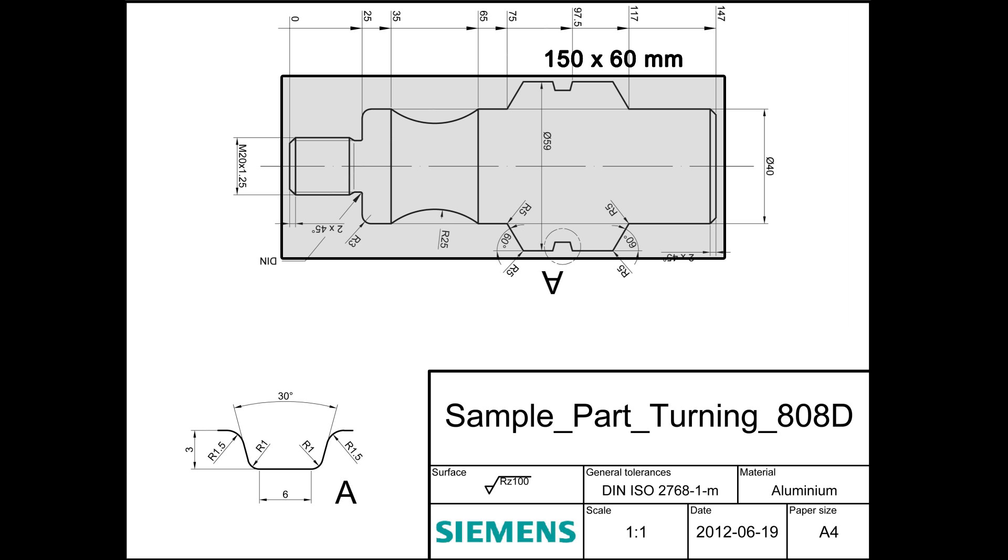The second operation: turn the part around, fix the chuck again, and turn the contour on the other end of the workpiece.